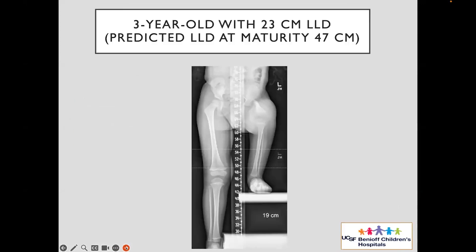I'll go through a couple of cases to stir up some more controversy. When you have a kid with congenitally severe shortening, what do you address first — the hip, the knee, the foot, everything together — and what timing? This is a three-year-old with primarily a PFFD-like situation with actually a good foot.